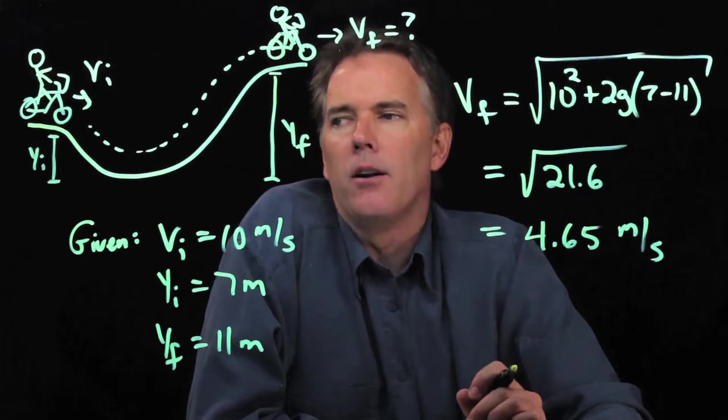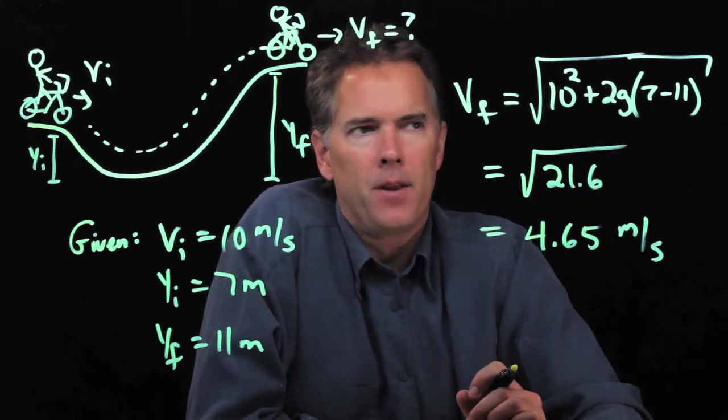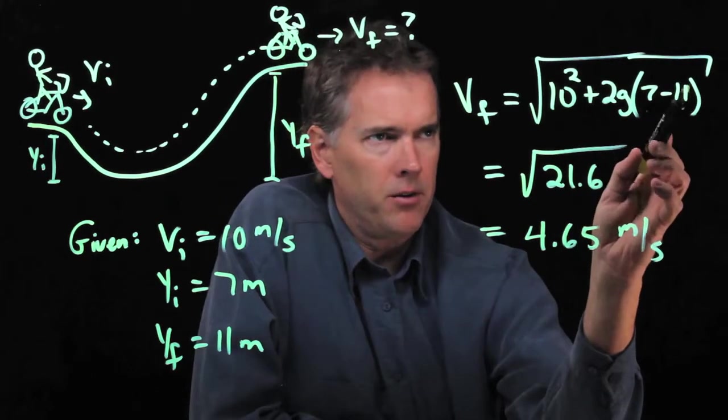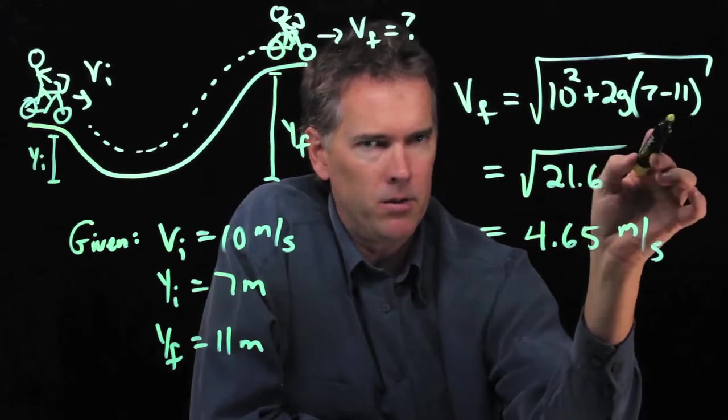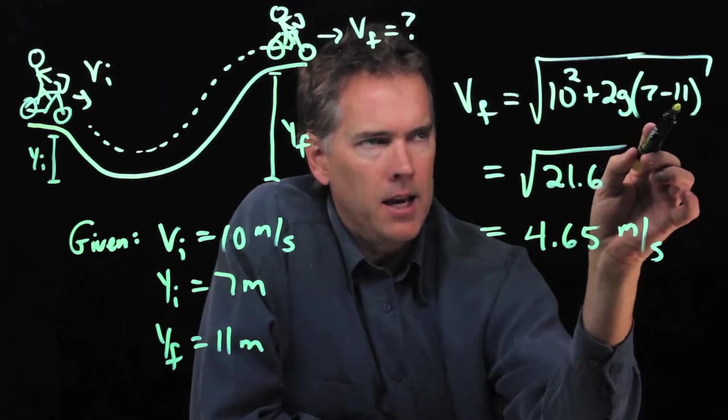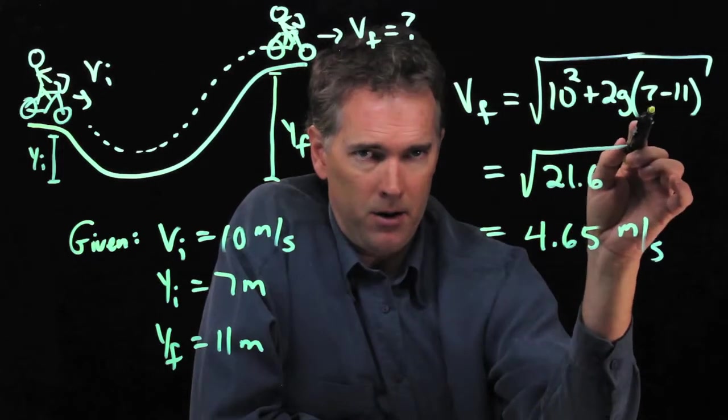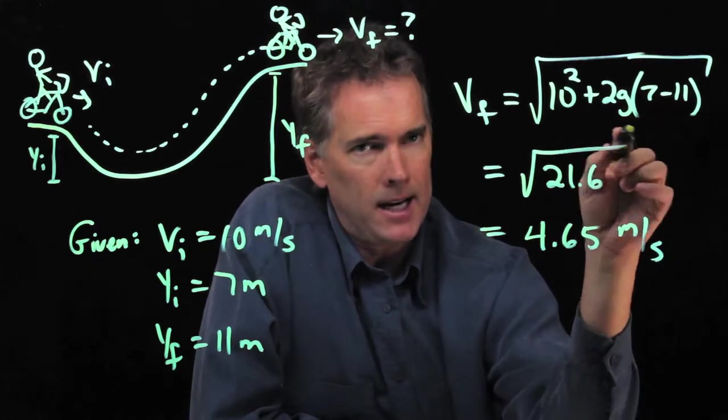Now there's something sort of interesting right here. We have a 7 minus 11; that's a negative number. And if that negative number keeps getting bigger, eventually that negative number...